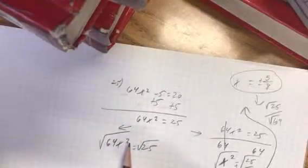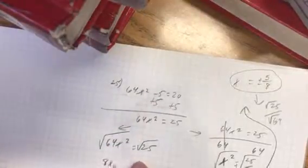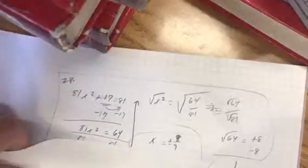So, the square root of 64x squared is 8x. 8x times 8x is 64x squared. Let me pull this over to show you a little bit more.